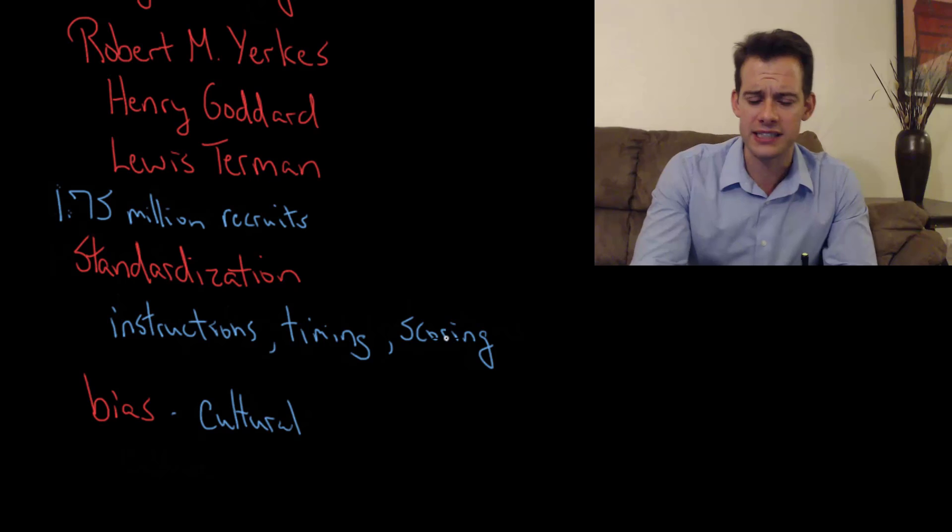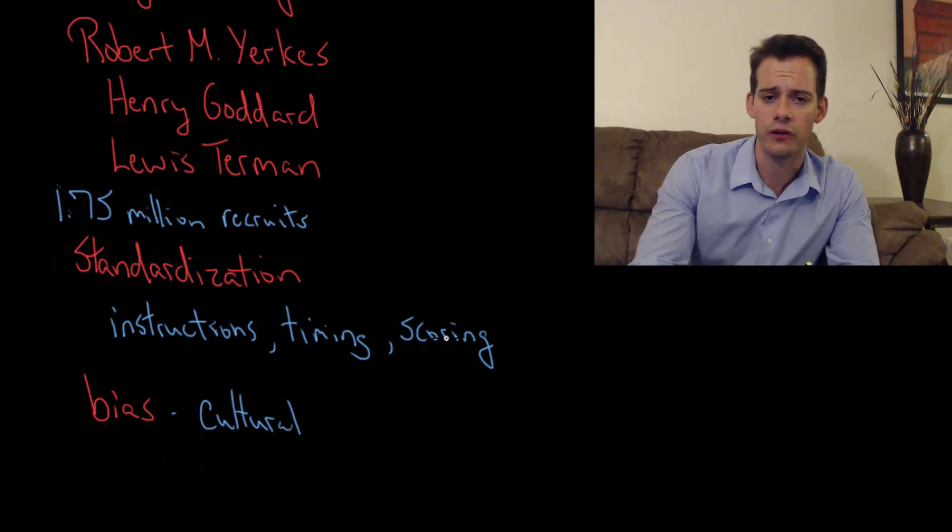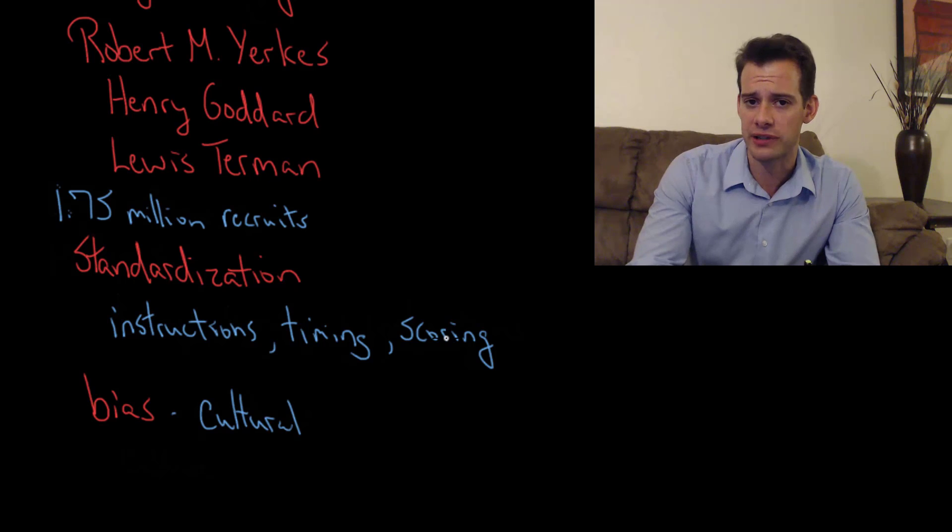And this is cultural bias. This cultural bias showed itself in questions like Cornell University is at Ithaca, Annapolis, Cambridge, or New Haven. A question like this really depends on your knowledge of the United States. If you've never heard of Cornell University and you've never heard of those cities, then you're going to have a really hard time answering that question. And it's really not assessing anything about your innate intelligence. It's really about your experience.